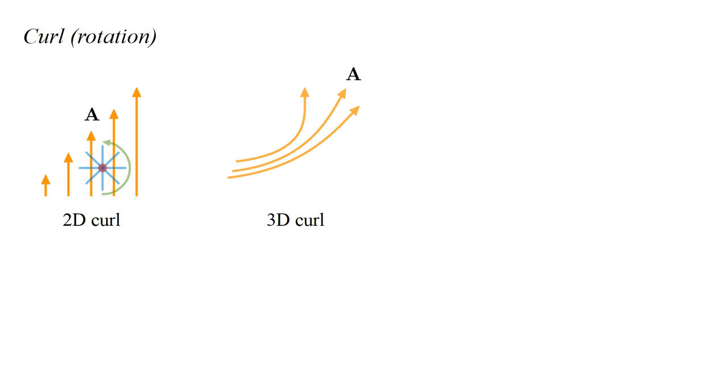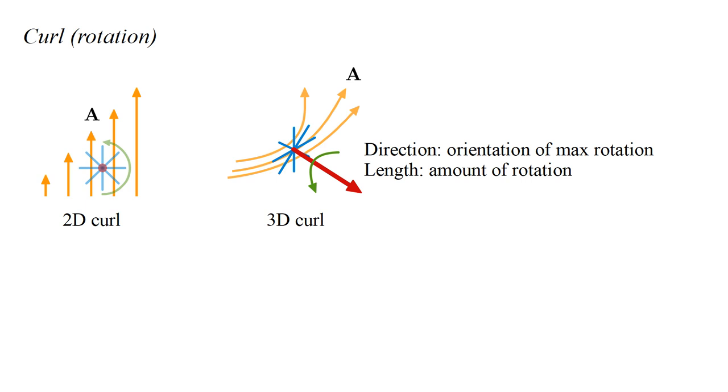For the three-dimensional case, we put the paddle wheel at a point, and we move its axis through all possible orientations until we find the one that produces the greatest rotation. Then the curl of the field at that point is represented by a vector pointing in the direction of this maximum rotation orientation, and with length equal to the amount of rotation. This is symbolized by del cross A.